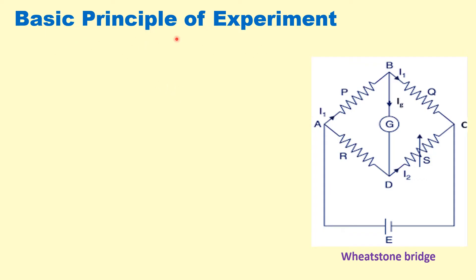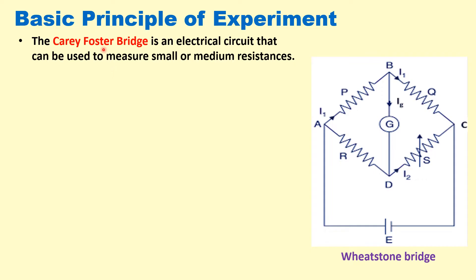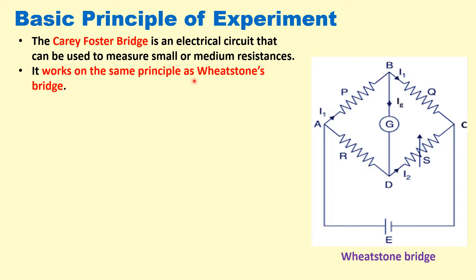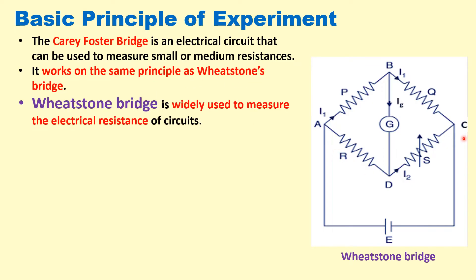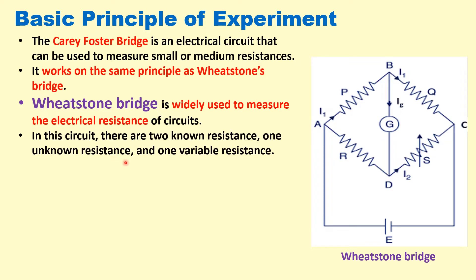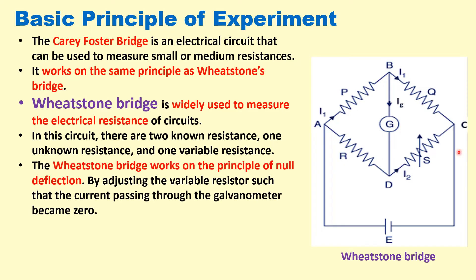We will briefly discuss the principle of the experiment. Carey-Foster bridge is used to measure small or medium resistances and it works on the principle of Wheatstone bridge, which is widely used to measure the electrical resistance of circuits. Wheatstone bridge has four resistances and one galvanometer. Two resistances P and Q are the known resistances, R is the unknown resistance, and S is a variable resistance.